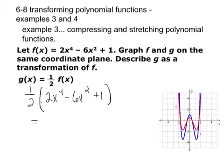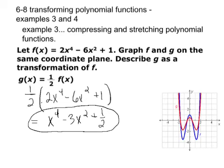And we would get an answer of 1 half times 2 is 1. 1 half times 6 is 3. And 1 half times 1 is 1 half. So that would be our polynomial function. And when you graph f of x and g of x in your calculator, you should get a vertical compression towards the x-axis. And the picture there in the corner is what you would see.